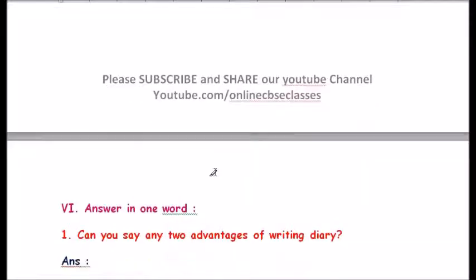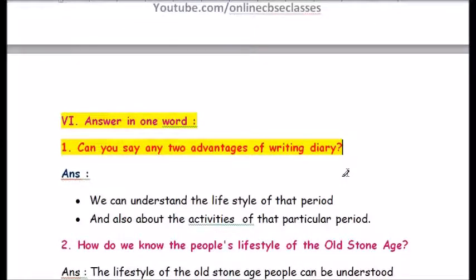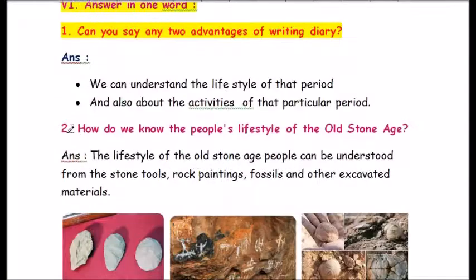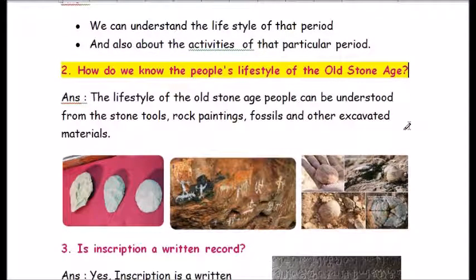Roman number six — answer in one word. Question one: two advantages of writing a diary — we can understand the lifestyle of that period and the activities of that particular period. Question two: how do we know the people's lifestyle of the old stone age? The lifestyle of old stone age people can be understood from stone tools, rock paintings, fossils, and other excavated materials.